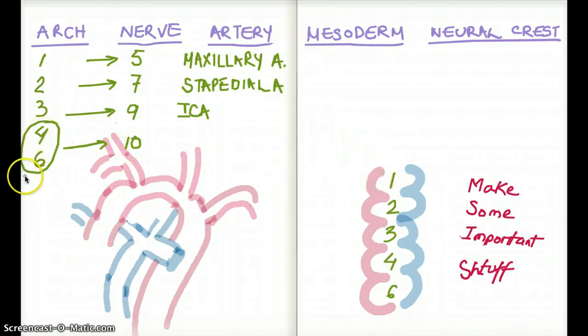And 4 and 6 has a bunch of arteries. So let's go with 4 first. For 4, we have the right subclavian artery and the arch of aorta. That is supplied by 4. So let's look at our diagram to see where that lies. This would be our right subclavian artery. And this is the arch of aorta.